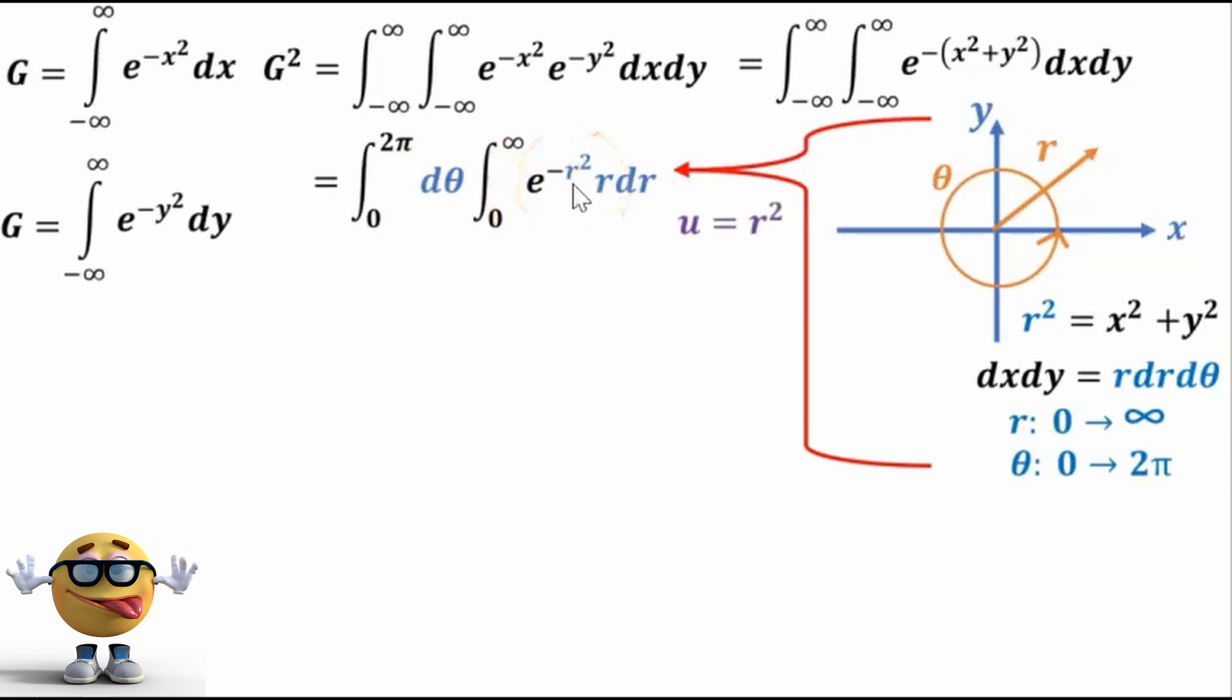we're going to do a u substitution. So we'll set u equal to r squared, so du over dr equals 2r, and if we substitute this into here, what we get is, so theta doesn't change, but now we have u's instead of r squares. So we substitute this, and at this point...